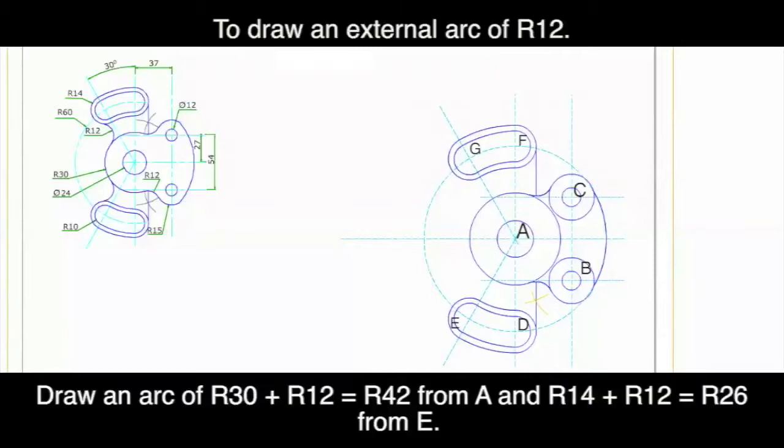Then draw vertical line and to draw an external arc of radius 12 we will take 42 from A and 26 from E and from that point we will draw radius 12. Same on the upper side.